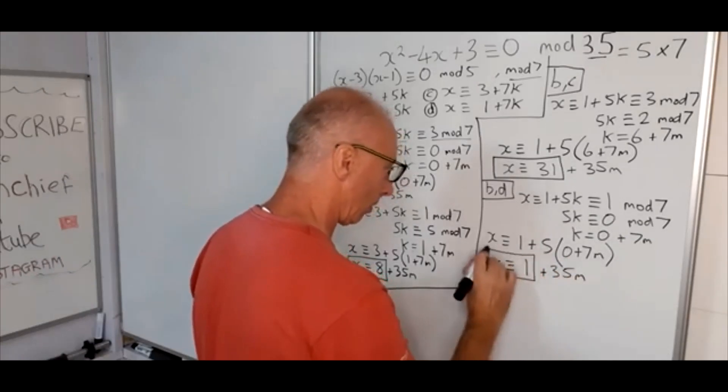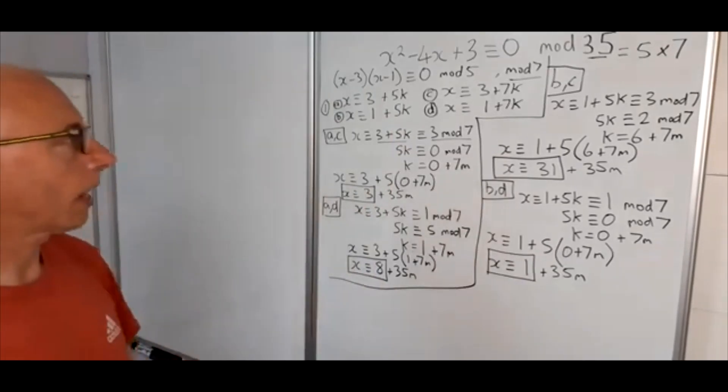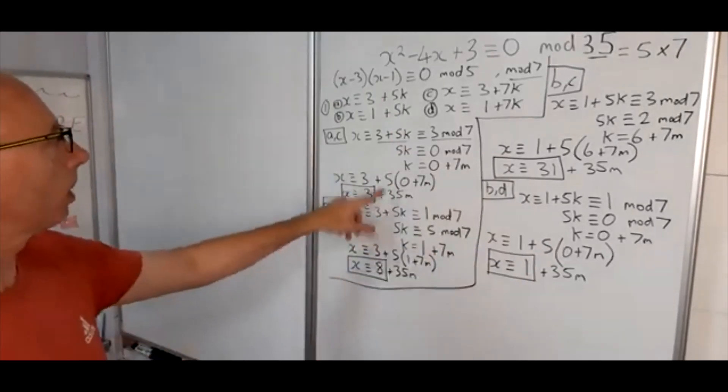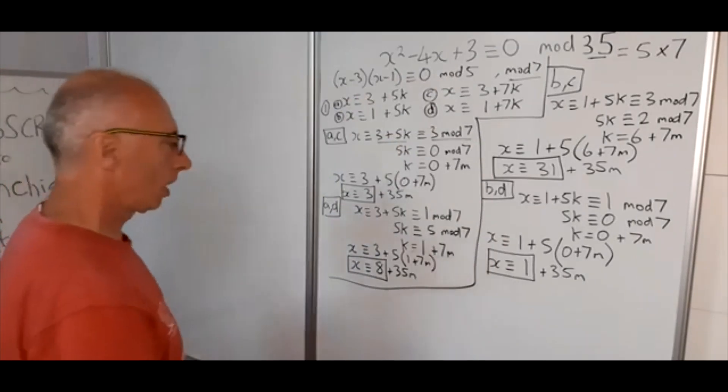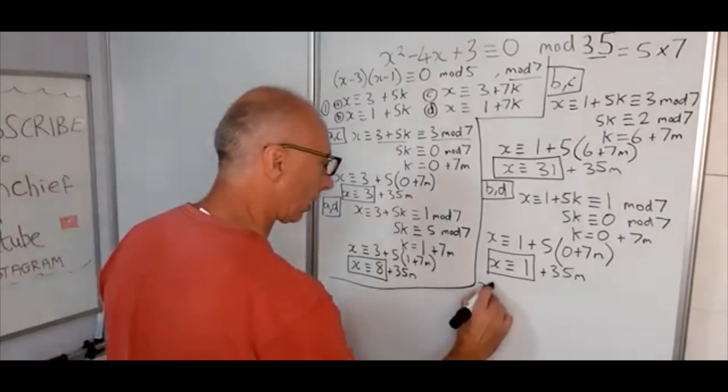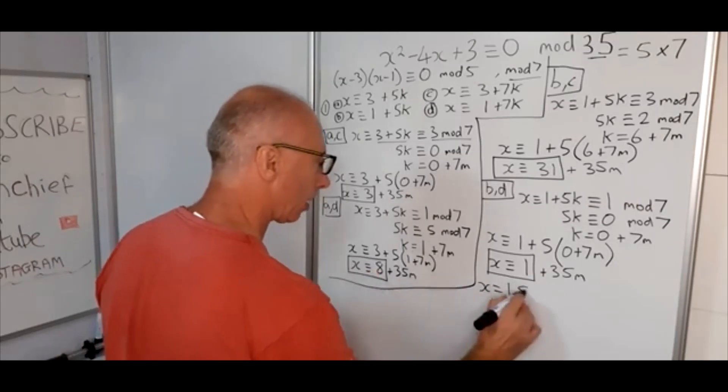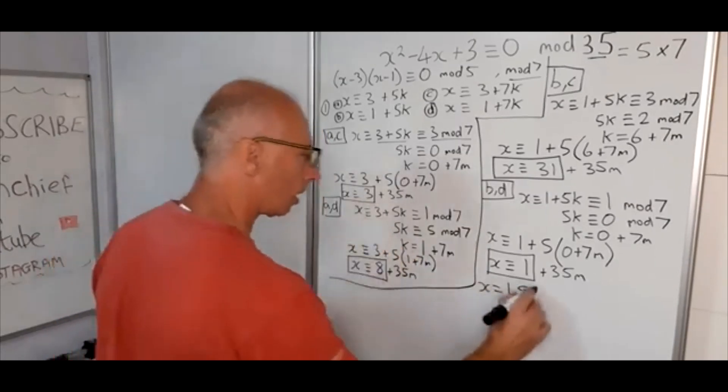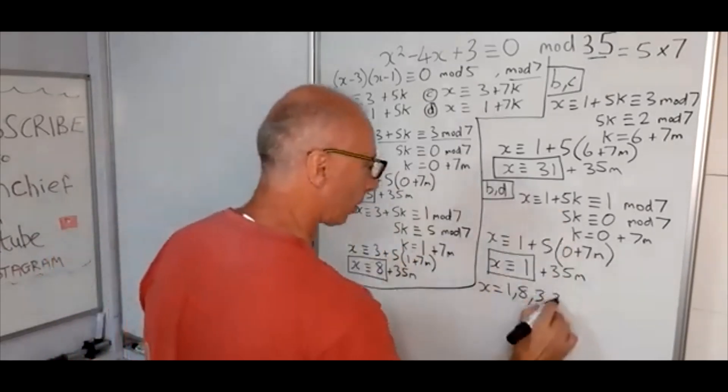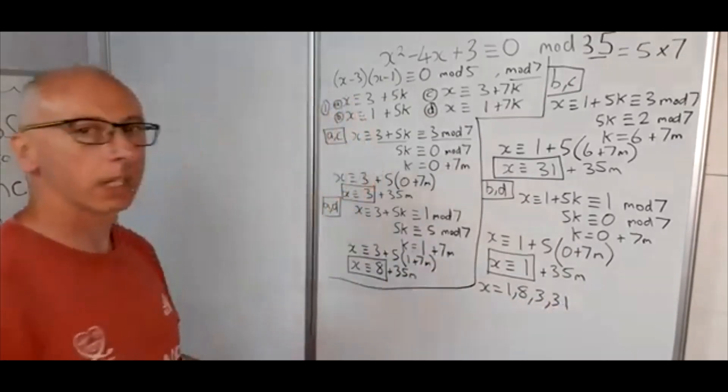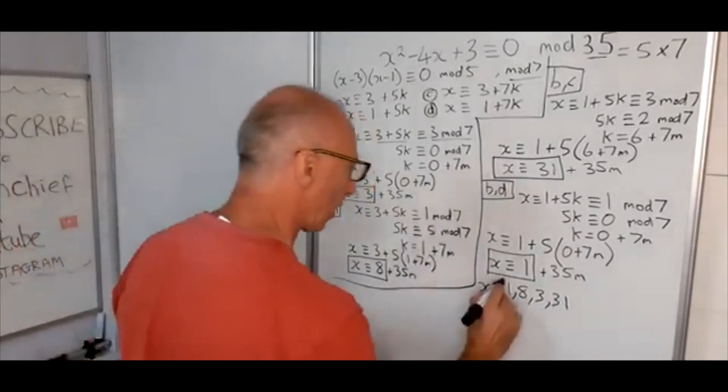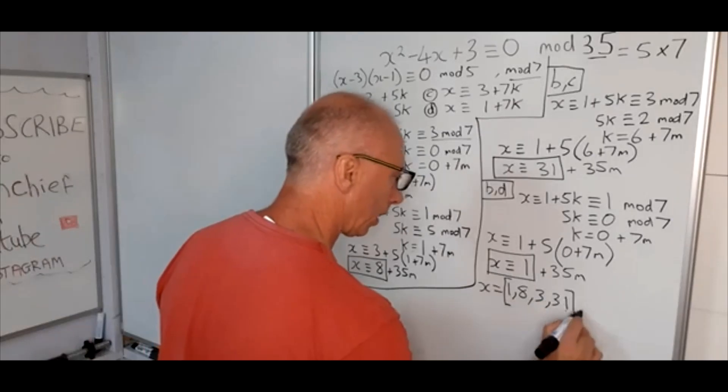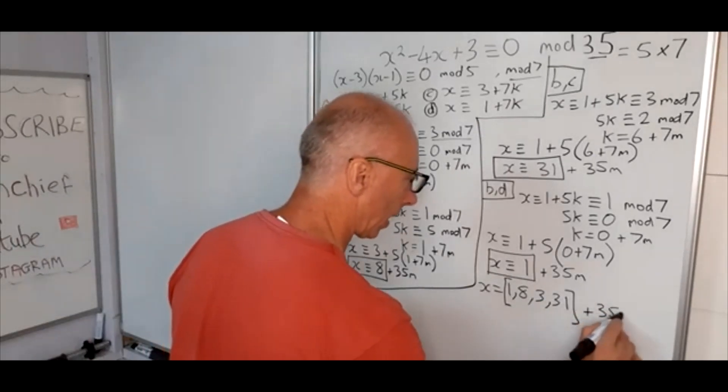So that is our 4 solutions to this equation here, so we've got x equals 1, 8, 3, and 31. And all of these will be plus 35m, so we can do that, plus 35m, any one of those.